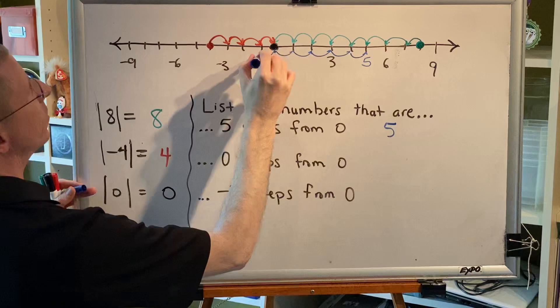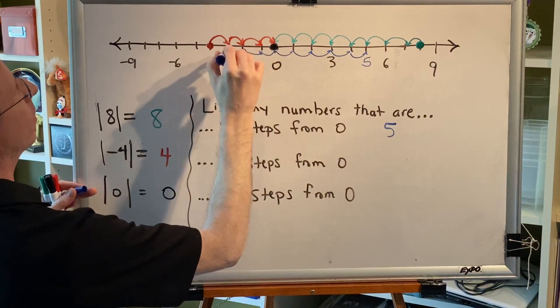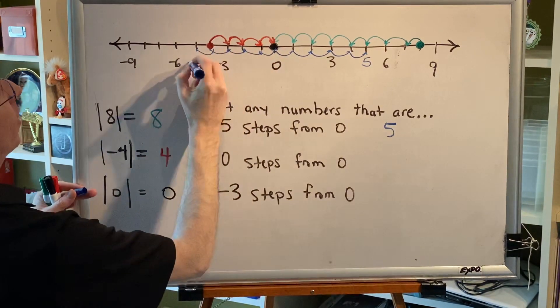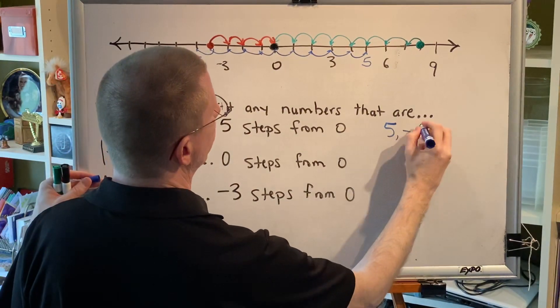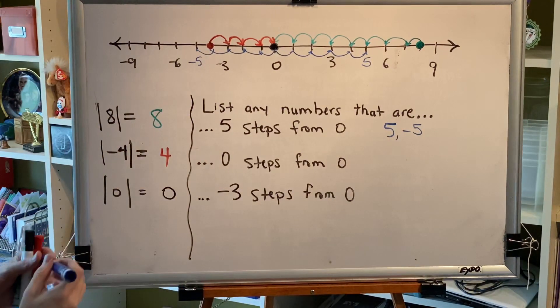But if you go five steps to the left, you end up with the number negative five. So, there are two answers to this question, five and negative five.